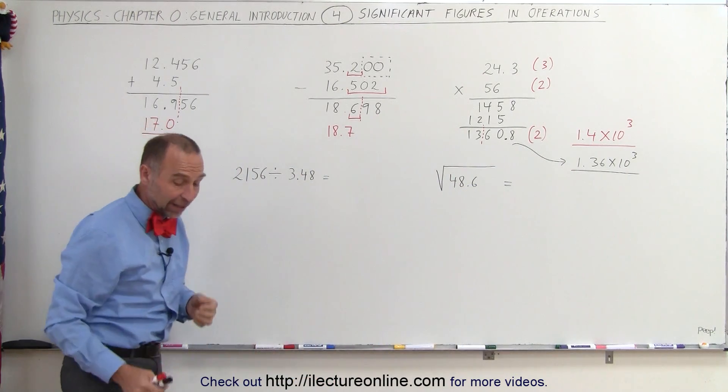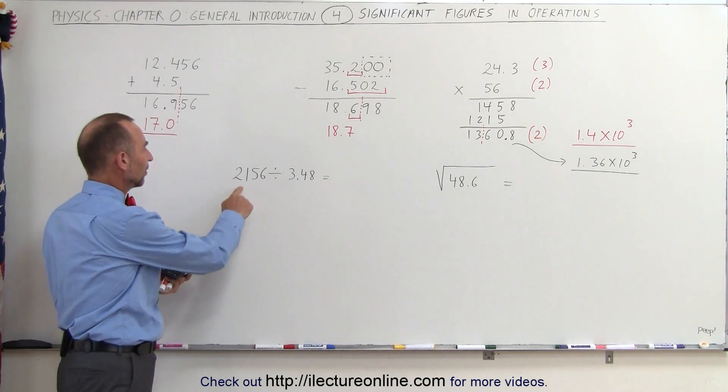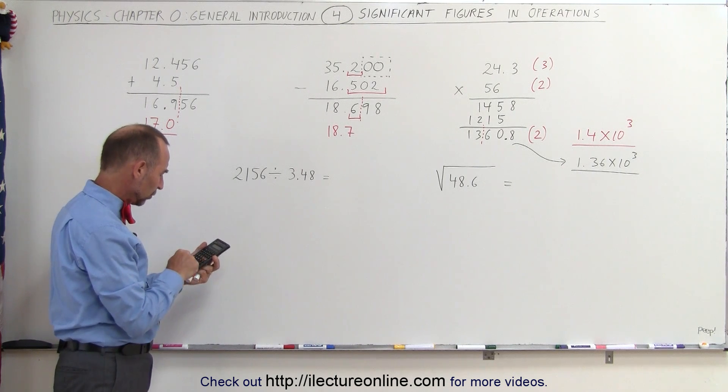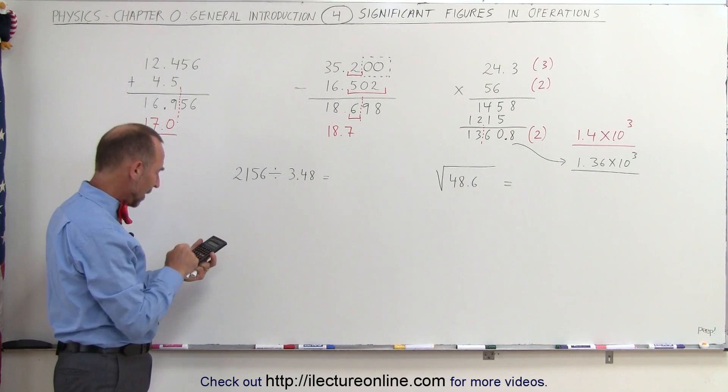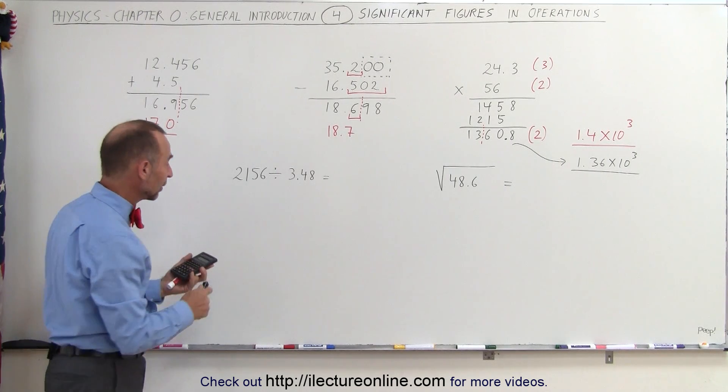Coming over here, we have a division. Now for that, I'm going to need a calculator, otherwise I'll spend so much time working it out. But let's say we take the number 2,156 and we divide it by 3.48. Now this, my calculator will give me the following result.